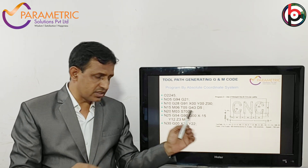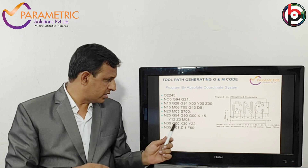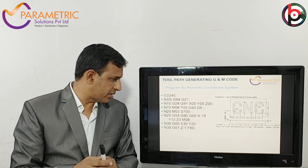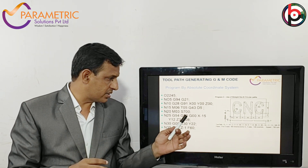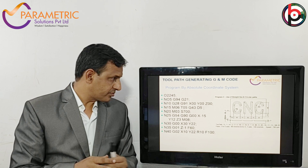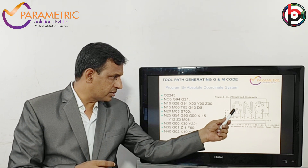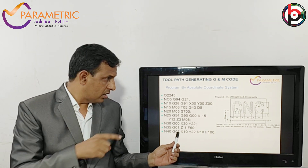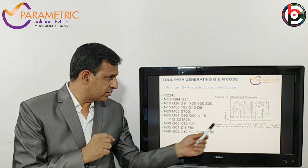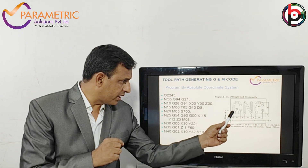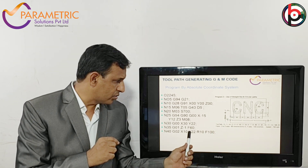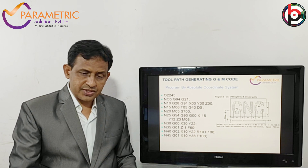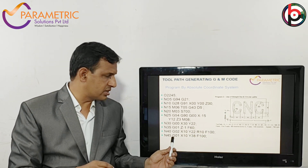Linear interpolation is the next step. G01 commands a cutting depth of Z minus 1 mm with a feed of 60 mm per minute. Next, from here, the radius is R10 — that is G02 in the clockwise direction. Then X10, from here this is 10 mm and Y22, R10, and feed 100 mm per minute. Then a straight cut from the second point to the third point: G01, X10, Y38, and F100.